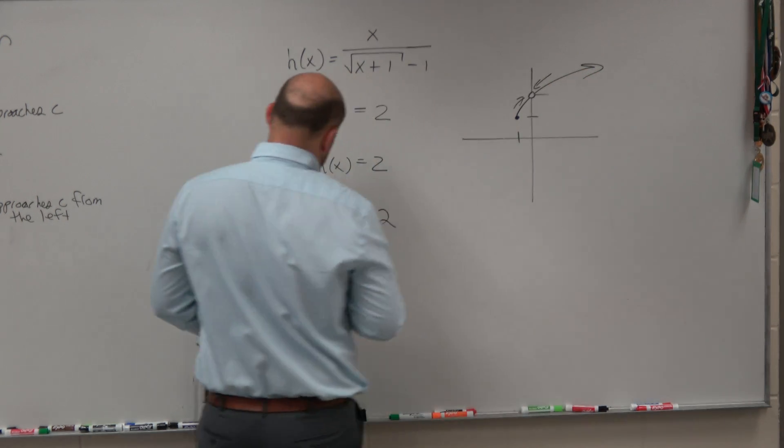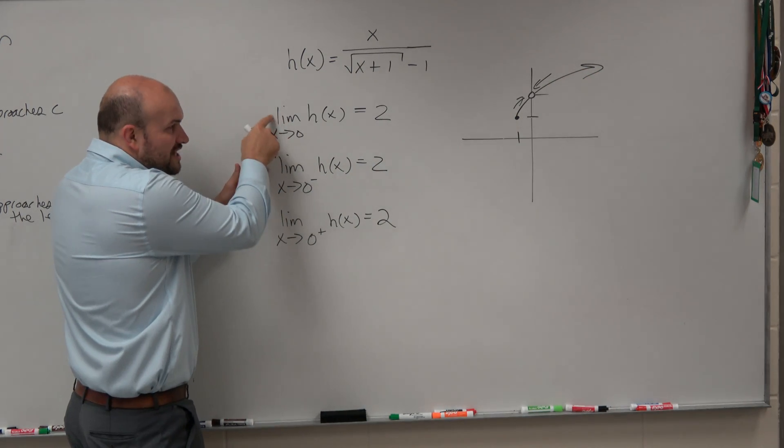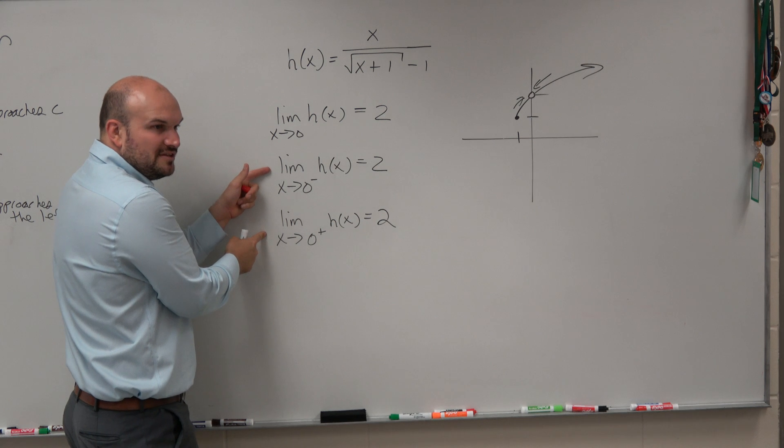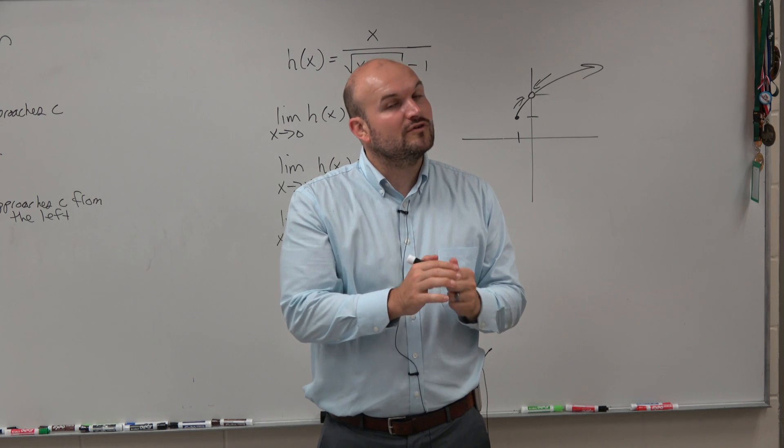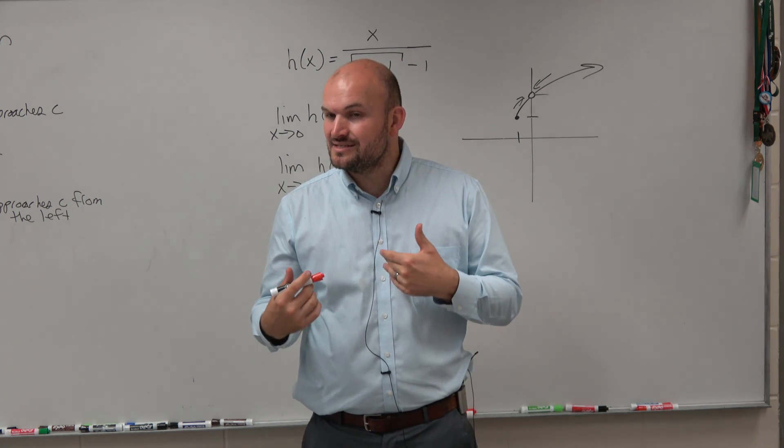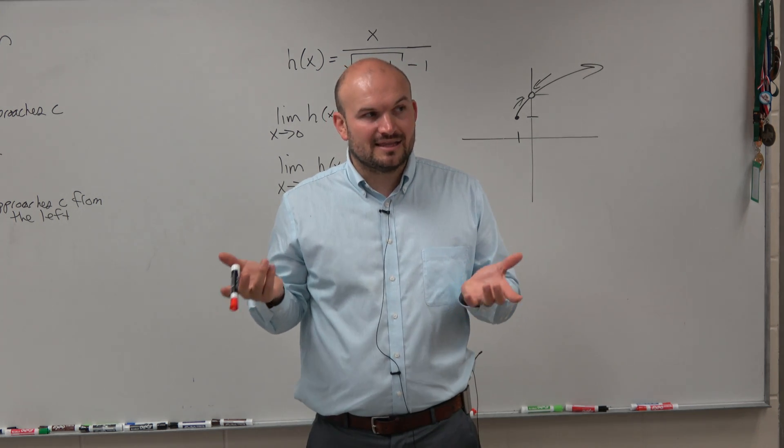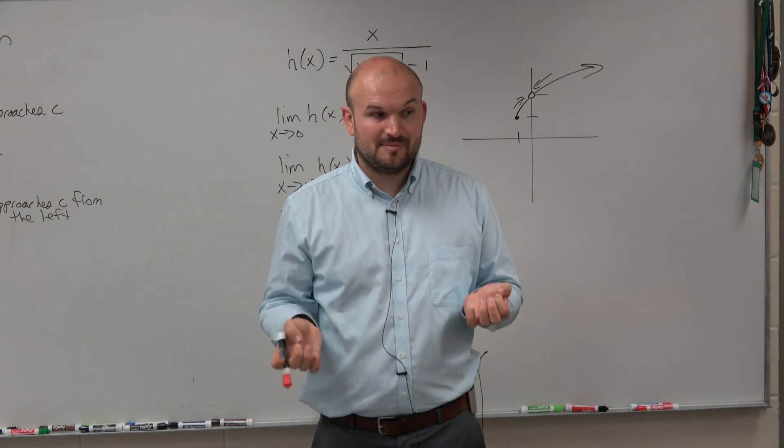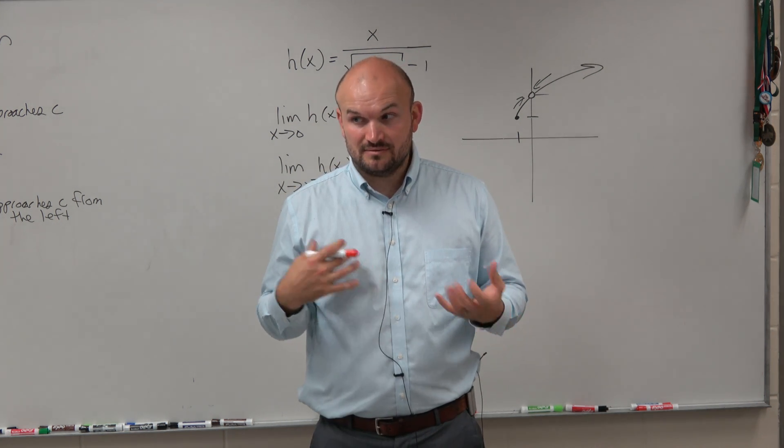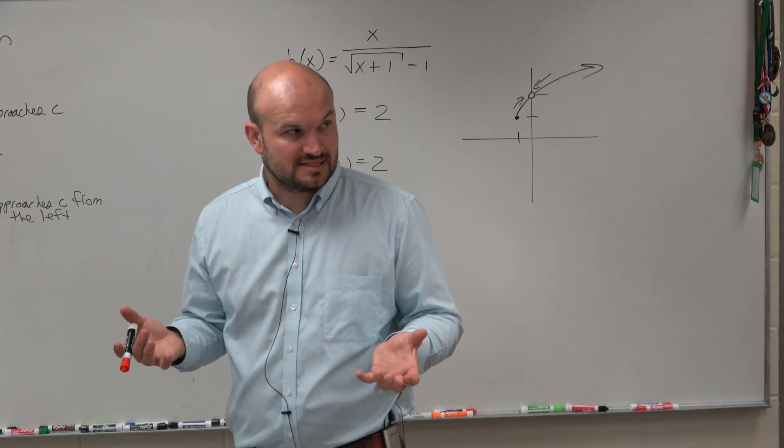Remember, guys, for the general limit to exist, the left and the right hand have to be the same. I'll say that again because it's actually going to come up later in this section. For the general limit to exist, the left and the right hand limit have to be exactly the same. If the left and the right hand limits aren't the same, then the general limit does not exist.